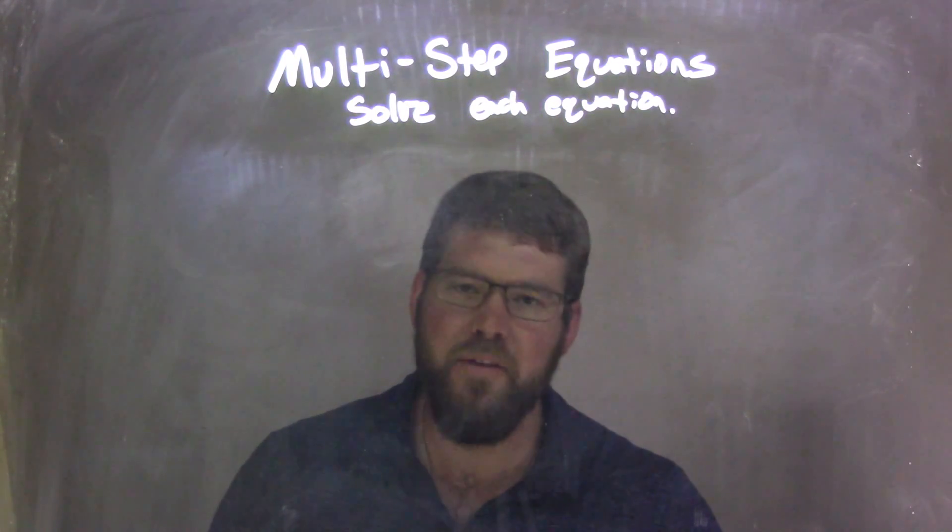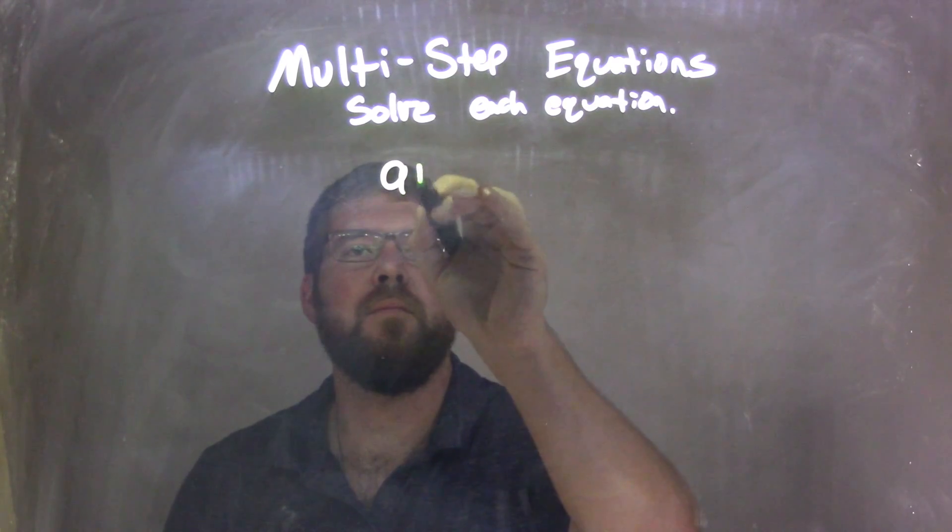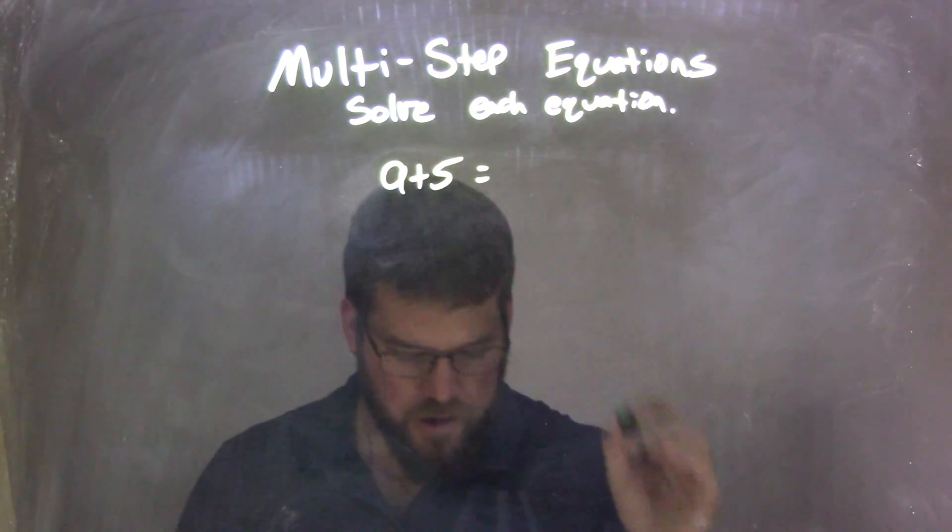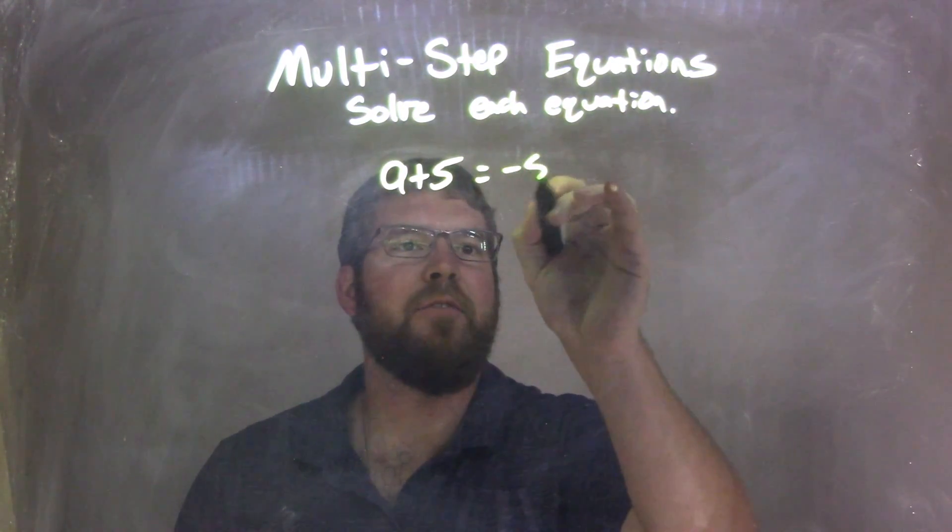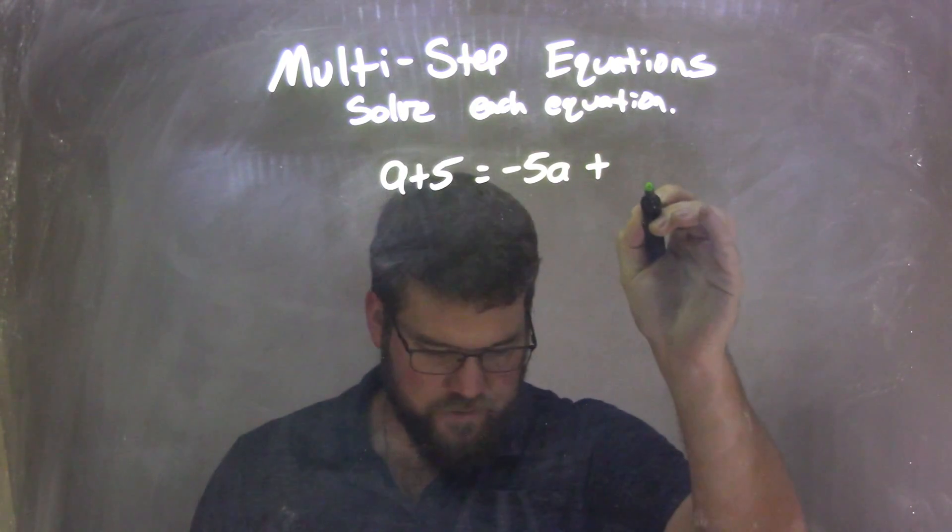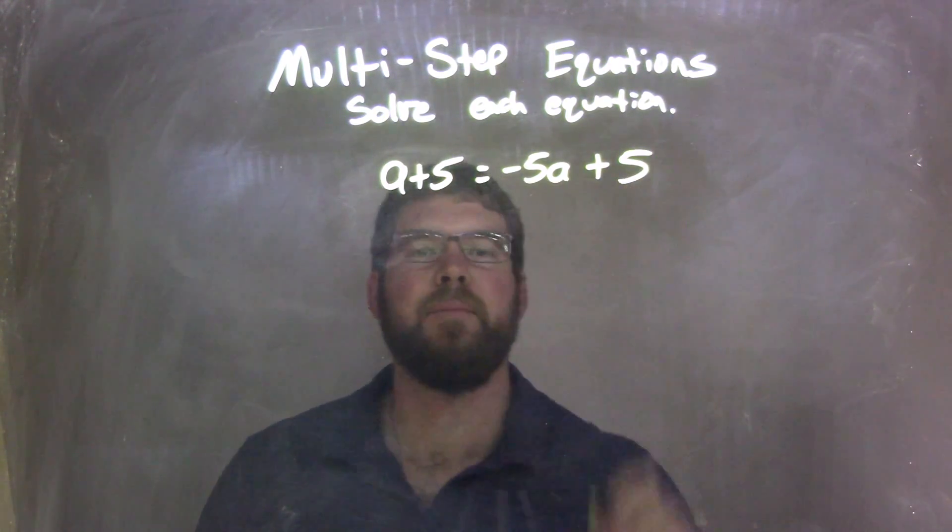So, I was given this equation: A plus 5 equals negative 5A plus 5.